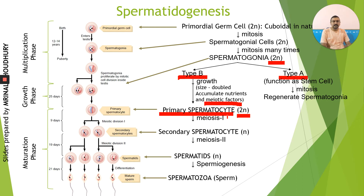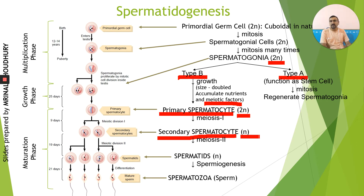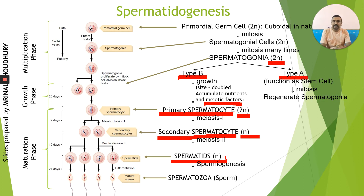From puberty onwards, the primary spermatocytes start undergoing the maturation phase. These diploid spermatocytes undergo the first meiotic division, that is meiosis I, to give two secondary spermatocytes, which are haploid in nature because the first meiotic division is always a reductional division. The secondary spermatocyte then undergoes the second meiotic division to give rise to spermatids, which are the final haploid end product of the meiotic process.